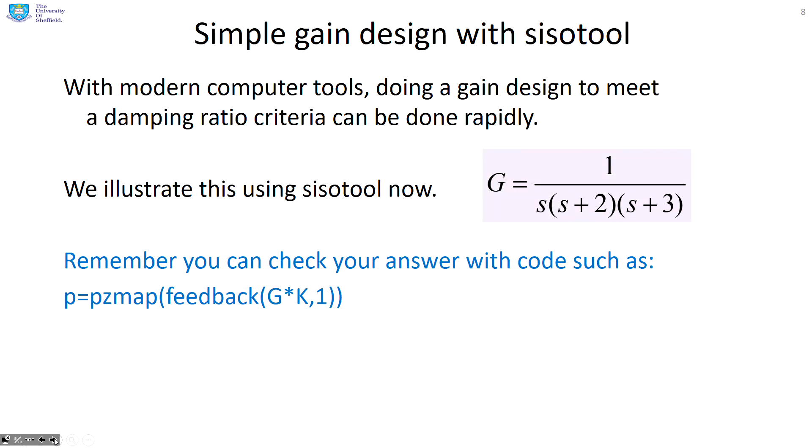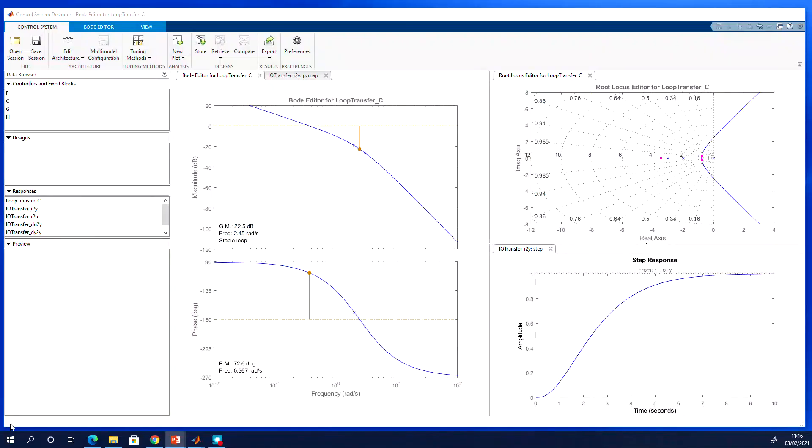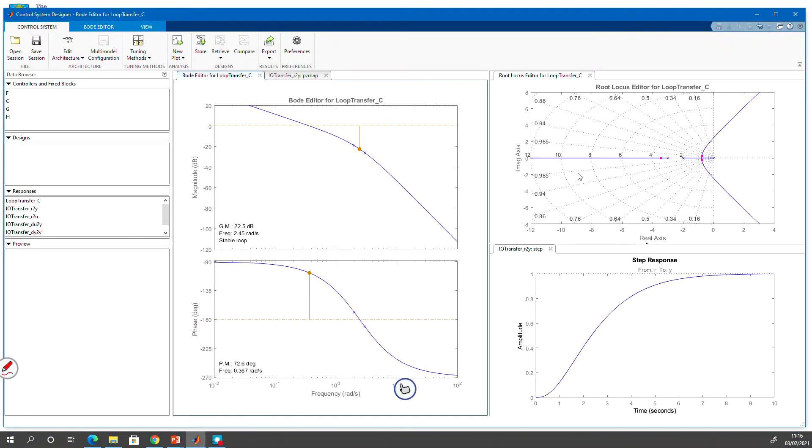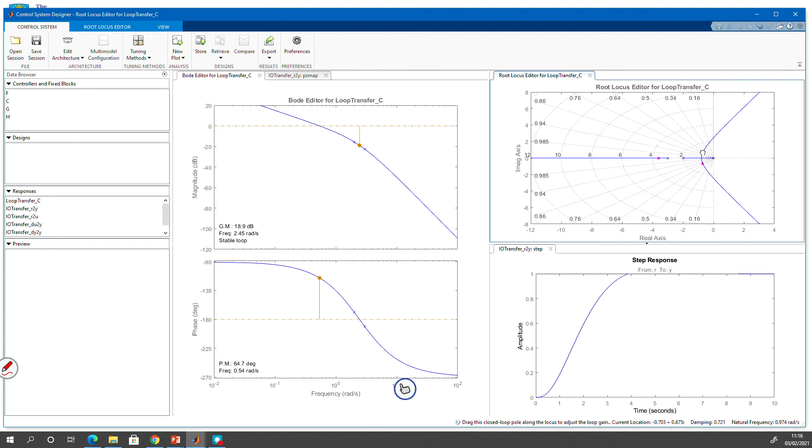Now, people used to do this on pen and paper, but these days we've got computer tools. So what I'm going to do is illustrate how using computer tools, you can do this very efficiently indeed. So here's my CISO tool and you can see the root loci over here. You can see I've put the grid lines on. So I actually want to lie on a grid line of about damping ratio of about 0.7. So I can, in theory, pick up one of these pink dots and move it and try and get it to be about 0.7. But the trouble is you're looking at this and you're saying, oh, it's a bit zoomed in. I can't really see exactly where I'm at.